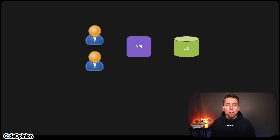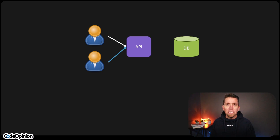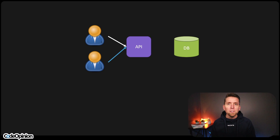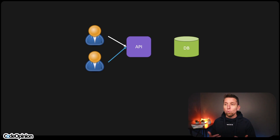When we're talking about a multi-user environment, you can have many different users or processes all interacting with your system concurrently. At some point, you may have different users or processes that are both trying to change the same object, record, document, or whatever the case may be in your database.